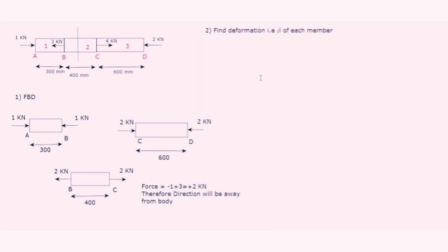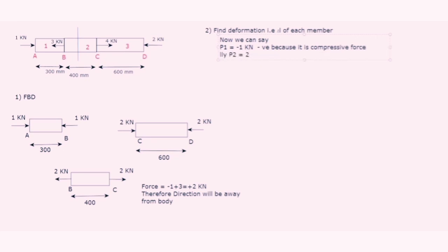Step two is to find the deformation delta L of each member. From the FBD, P1 is 1 kN acting towards the body — it is compressive, so it is negative: −1 kN. P2 is +2 kN as it is tensile. P3 is −2 kN because it is compressive. Remember: compressive force is negative and tensile force is positive. The lengths are: L1 = 300 mm, L2 = 400 mm, L3 = 600 mm.